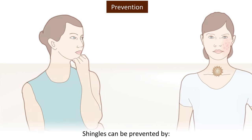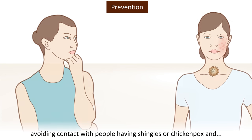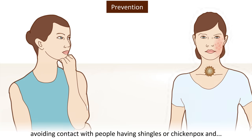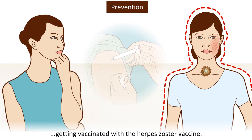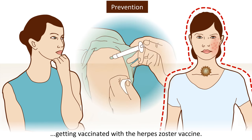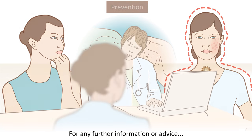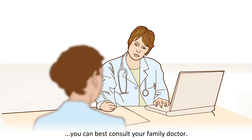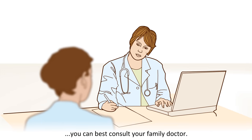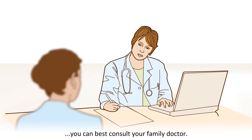Shingles can be prevented by avoiding contact with people having shingles or chickenpox, and getting vaccinated with the herpes zoster vaccine. For any further information or advice, you can best consult your family doctor.